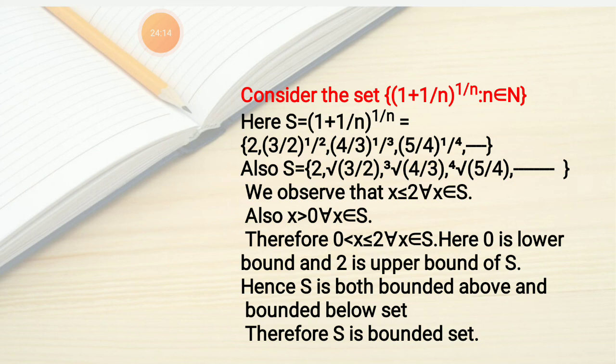In this lesson we learned about bounded above sets, upper bound, bounded below sets, lower bound, bounded sets, and unbounded sets. In the next class we are going to learn about least upper bound (supremum) of a set, greatest lower bound (infimum) of a set, and the supremum and infimum properties. Thank you.